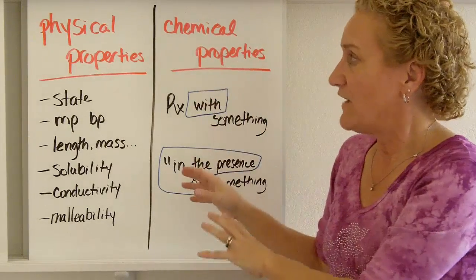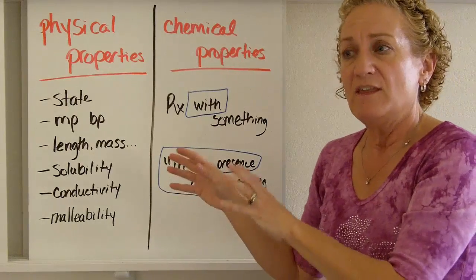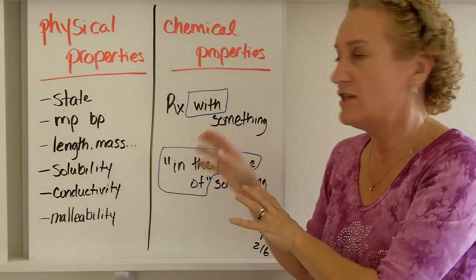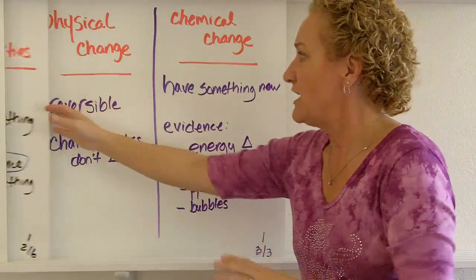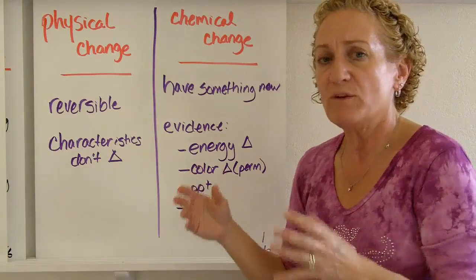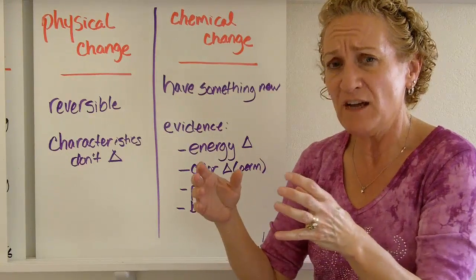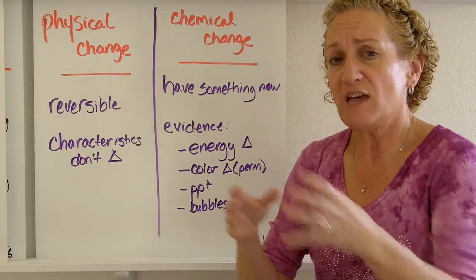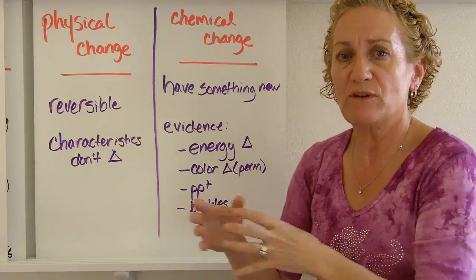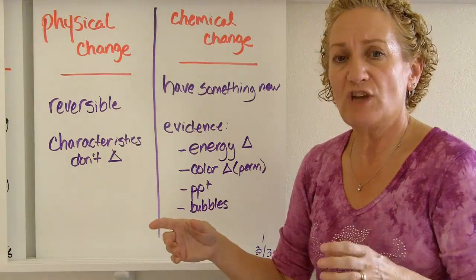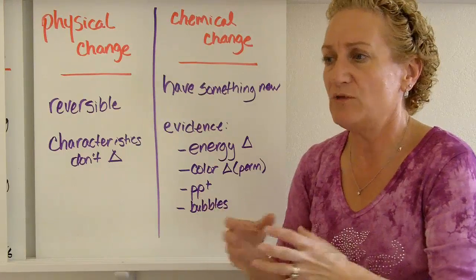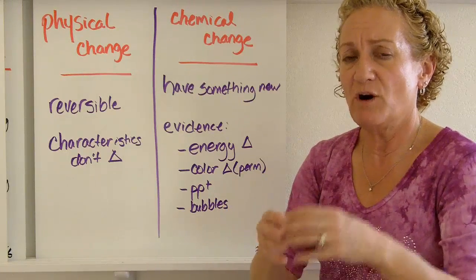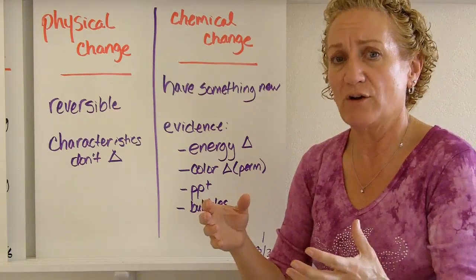Now that we know how to classify by physical and chemical properties, let's look at physical changes and chemical changes. Physical changes are reversible. If I take an ice cube and let it melt, it becomes liquid water, but if I freeze it again, I can turn it back into an ice cube. Also, the fundamental characteristics don't change — water is water whether it's an ice cube, liquid water, or steam.